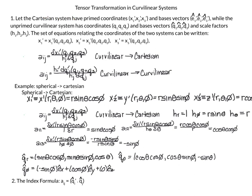We're going to let our Cartesian system be our primed coordinates: x1 prime, x2 prime, x3 prime — often called x prime, y prime, z prime — with basis vectors e1 prime, e2 prime, e3 prime. Our unprimed system will be our curved linear system, maybe spherical or cylindrical, with coordinates q1, q2, q3 and basis vectors q1, q2, q3. For curved linear systems, we have scale factors h1, h2, h3, because when we change our position vector by one unit in, say, the theta or phi direction in spherical, we're moving across a curve.